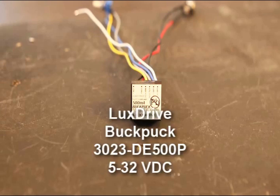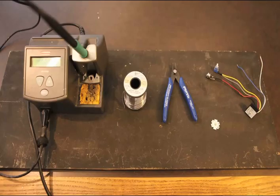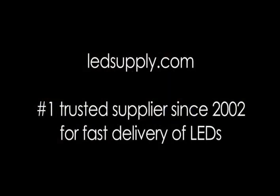A LuxDrive buck puck 3023-DE500P (5-32 volts with optional dimming), an optional 2.5mm power jack if you're connecting your buck puck to a wall adapter or other AC-fed power supply. All of these items are available on the LED Supply website at LEDsupply.com. Thanks for watching.